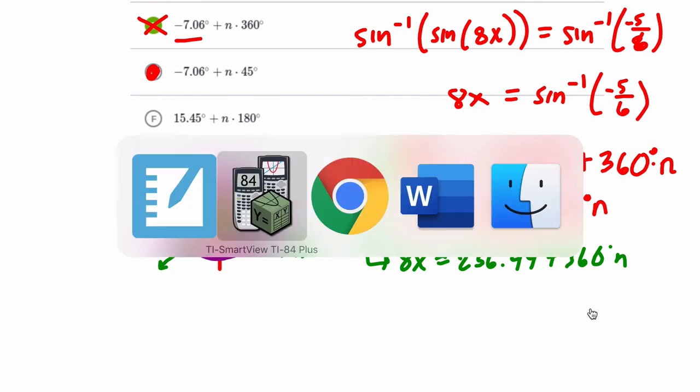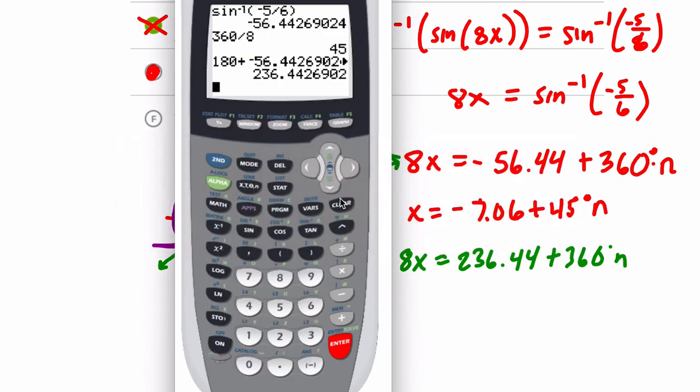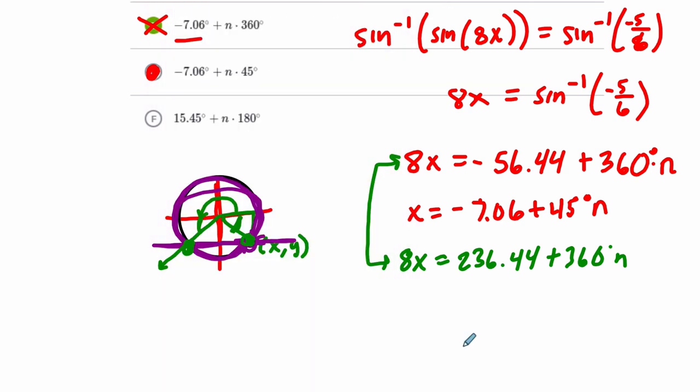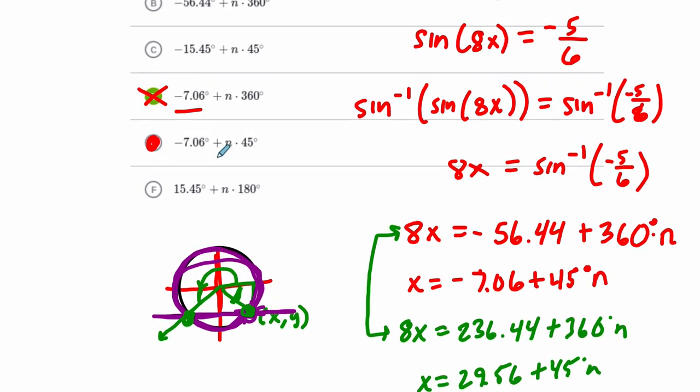And then, we want to also divide everything by 8, so divide this number we have here by 8, and we get 29.55. So, x could be 29.56 to the nearest hundredth, plus any amount of 45 degree rotations, and I'll look through my choices and see if they have that.